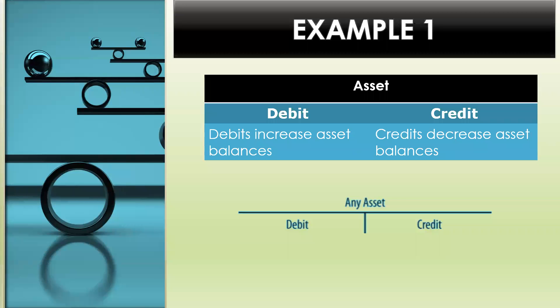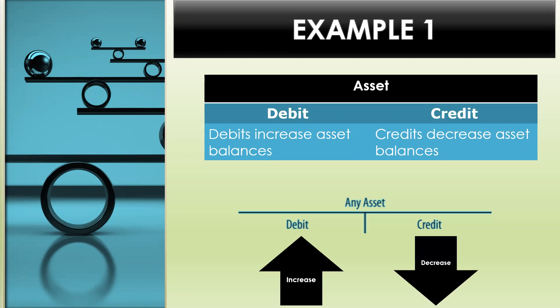Let's apply what we know to the following examples. Example one is showing an asset, and as we know, any asset will increase with a debit and it will decrease with a credit. Debits increase asset balances, and credits decrease asset balances.